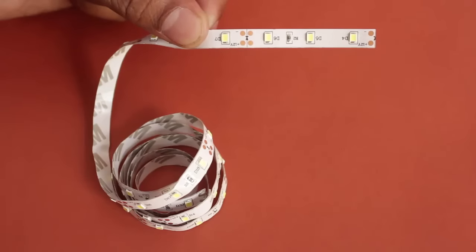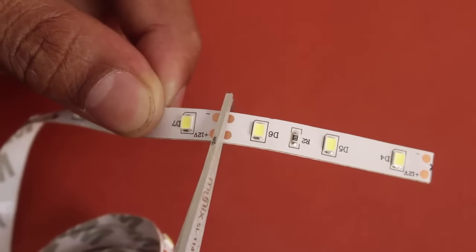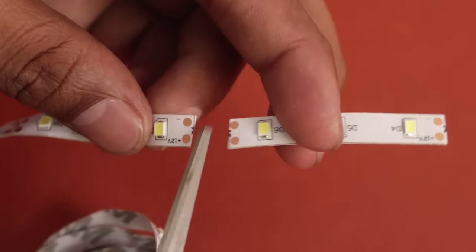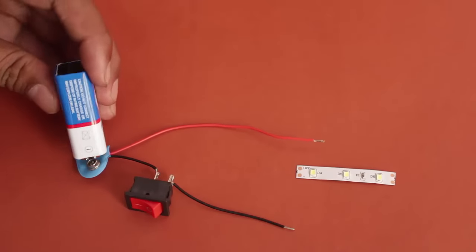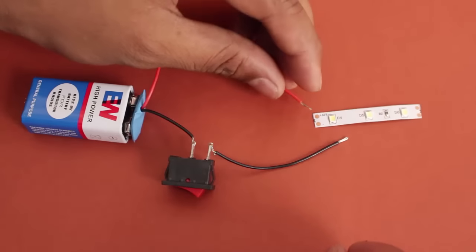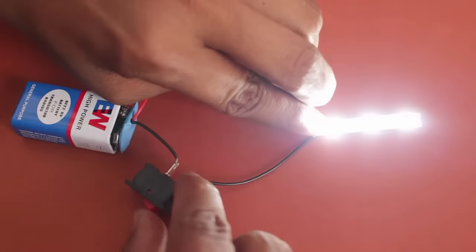The LED strips can be bought by the meter. Cut a length of 3 LEDs from the strip. Affix a 9V battery to the battery connector. On connecting the leads of the battery to the LEDs, they will light up brightly.